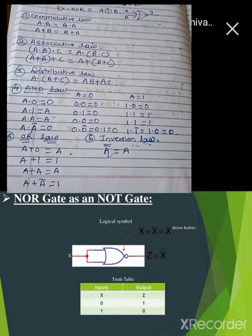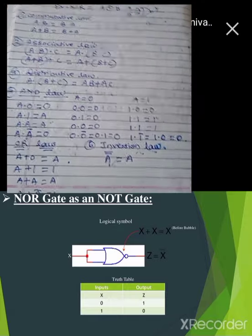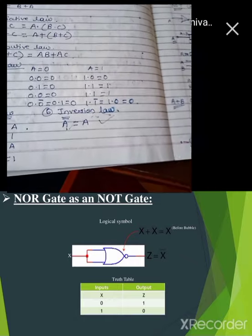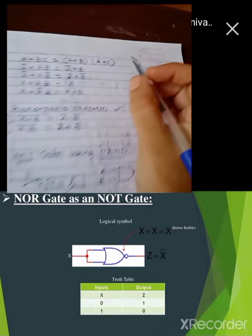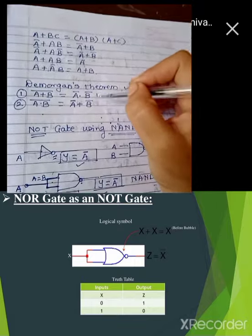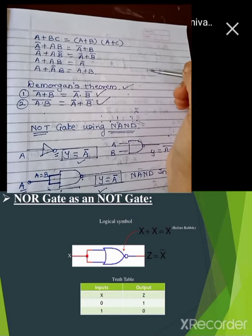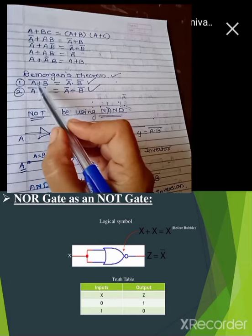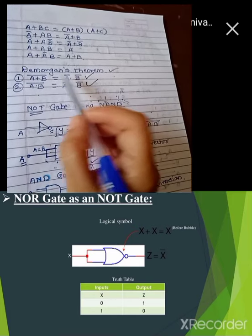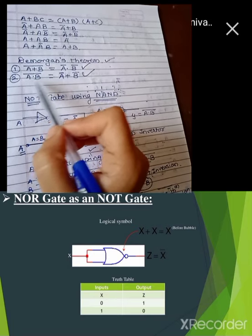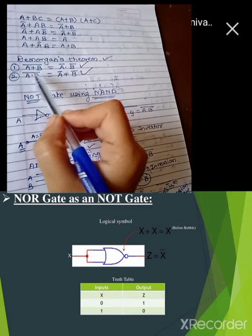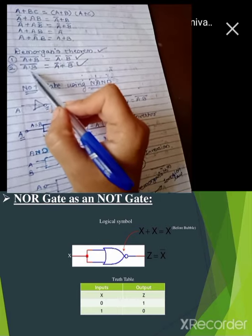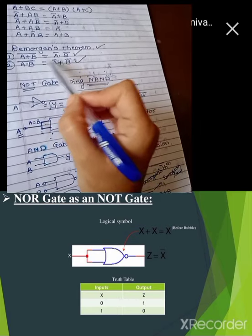While doing the NAND gate design as a universal gate we have applied some rules. We have used the inversion law — that is double bar cancels with each other. Then we have used De Morgan's theorem: A plus B whole bar equals A bar dot B bar, and A dot B whole bar equals A bar plus B bar. That means the plus is converted into multiplication and the complement gets separated, and likewise multiplication is converted into addition with the complement separated.